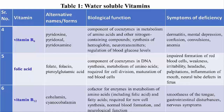Folic acid (also called folate) is a component of coenzymes in DNA synthesis and amino acid metabolism, required for cell division. Deficiency leads to impaired formation of red blood cells, weakness, irritability, headache and defects in the fetus. Vitamin B12 (cobalamin or cyanocobalamin) regulates metabolism of amino acids, fatty acids and neurological functions. Deficiency leads to smoothness of the tongue, gastrointestinal disturbances and nervous symptoms.